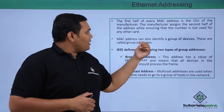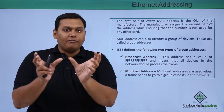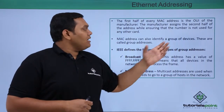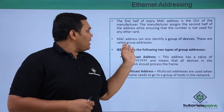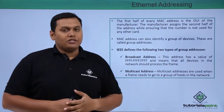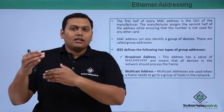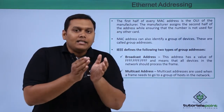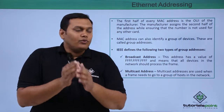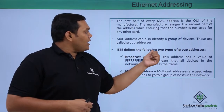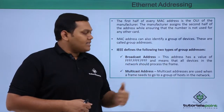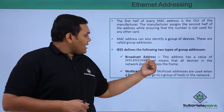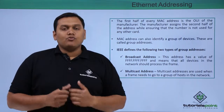MAC addresses can also identify a group of devices which are in the same network, and these are called group addresses. IEEE classifies group addresses into two types: broadcast address and multicast address.